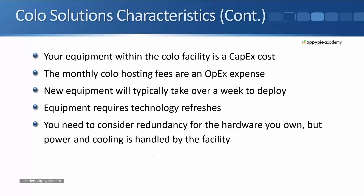More characteristics: your equipment within the colo facility is still a capex cost — you still had to buy it as an upfront cost, so that's capital expenditure. But the monthly colo hosting fees are now an operational expenditure. The difference between capex and opex: capex is a one-off upfront cost, and opex is an ongoing monthly fee. This makes having a highly available data center more affordable because rather than paying that huge upfront capex cost, you can pay it as a monthly opex cost. New equipment is still typically going to take over a week to deploy because you still own and provide the equipment — you still have to go through the same process of ordering it, having it delivered, cabling it, and configuring it.